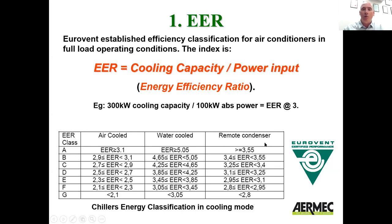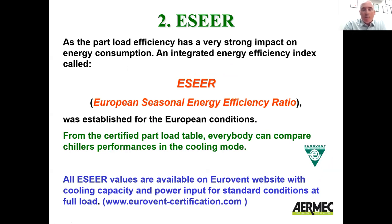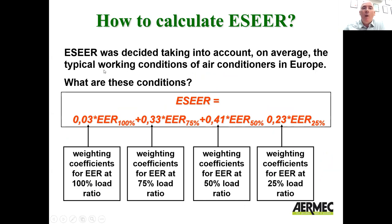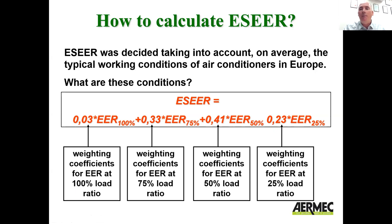So your air-cooled, your water-cooled, your remote condenser with a condenserless unit. But we rarely run at 100% load, so your European Seasonal Energy Efficiency Ratio is more important, particularly for HVAC applications, because they're ramping up and down throughout the year to suit the load. This is what's called a weighted formula. We assume that the chiller will run at 100% load for only 3% of the year, 75% load for 33% of the year, 50% load for 41% of the year, and 25% load for 23% of the year. All manufacturers have to submit their energy efficiency ratio using this formula, and therefore you get an independently verified classification from Eurovent.